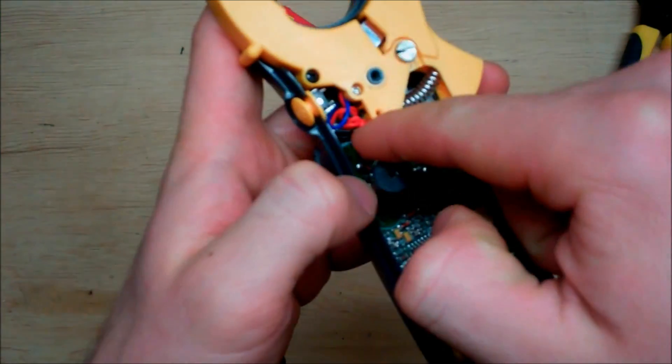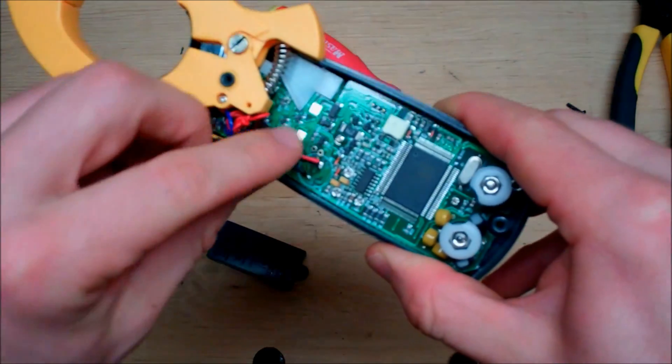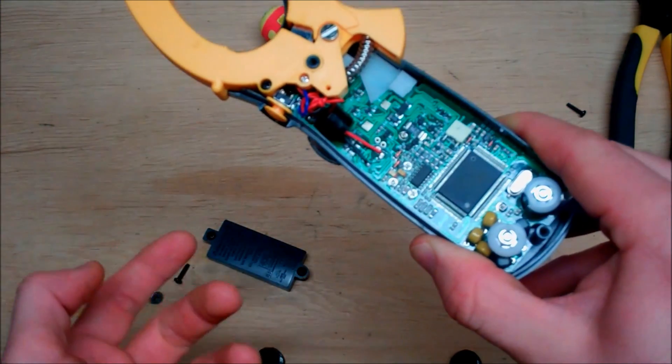These loose wires right here, not overly fond of, but it's not a big deal because this is a compartment you'll never get in. And this type of multimeter, there's no fuses, so you don't have to worry about changing anything like that.